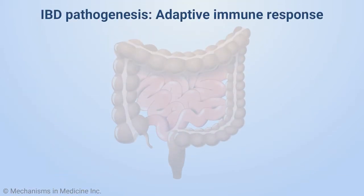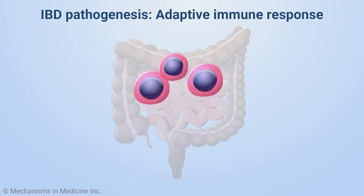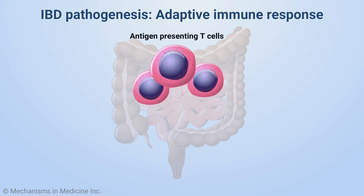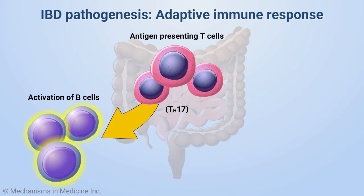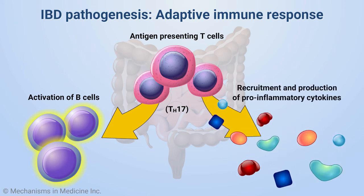A subsequent adaptive immune response is mediated by antigen-presenting T cells. T cells, mainly T helper 17 cells, have been identified as key effectors in the immune pathogenesis of IBD. This results in the recruitment and production of various inflammatory mediators, including cytokines.